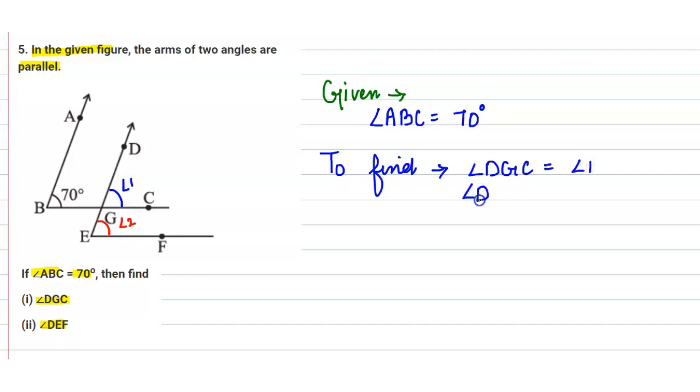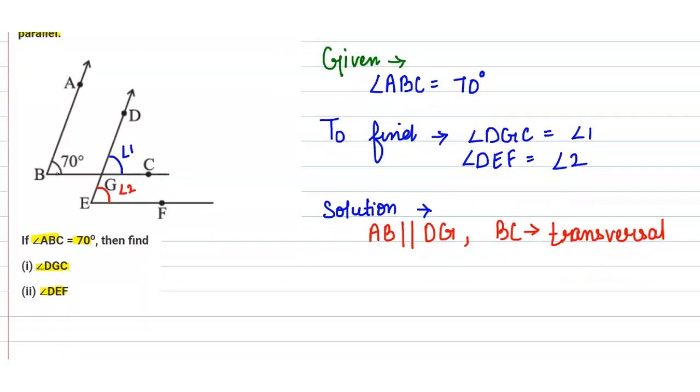And angle DEF, which is equal to angle 2. Let us solve this question. First of all, if arm AB is parallel to the arm DG, and BC is our transversal, so from the corresponding angle property...